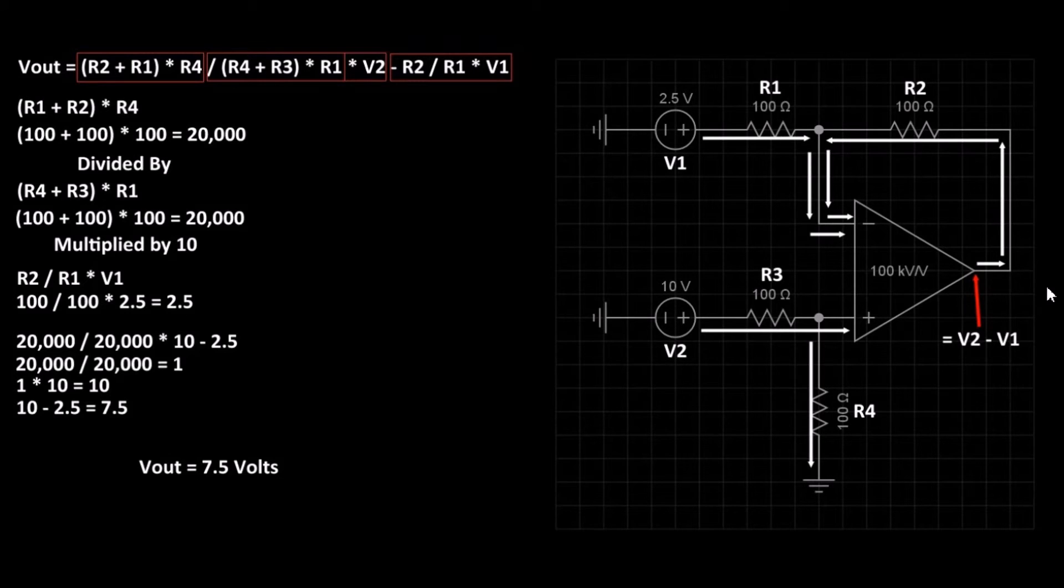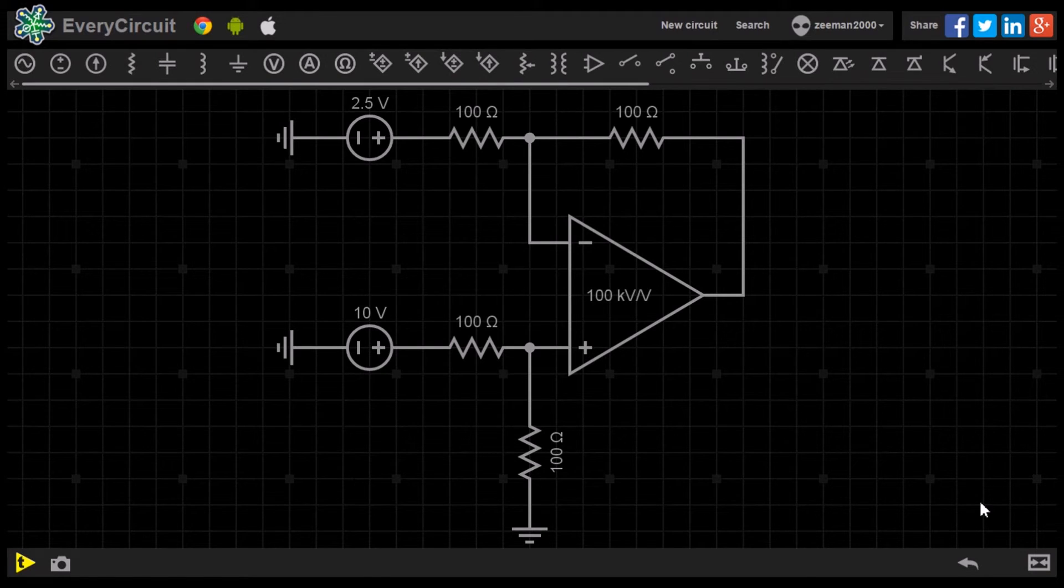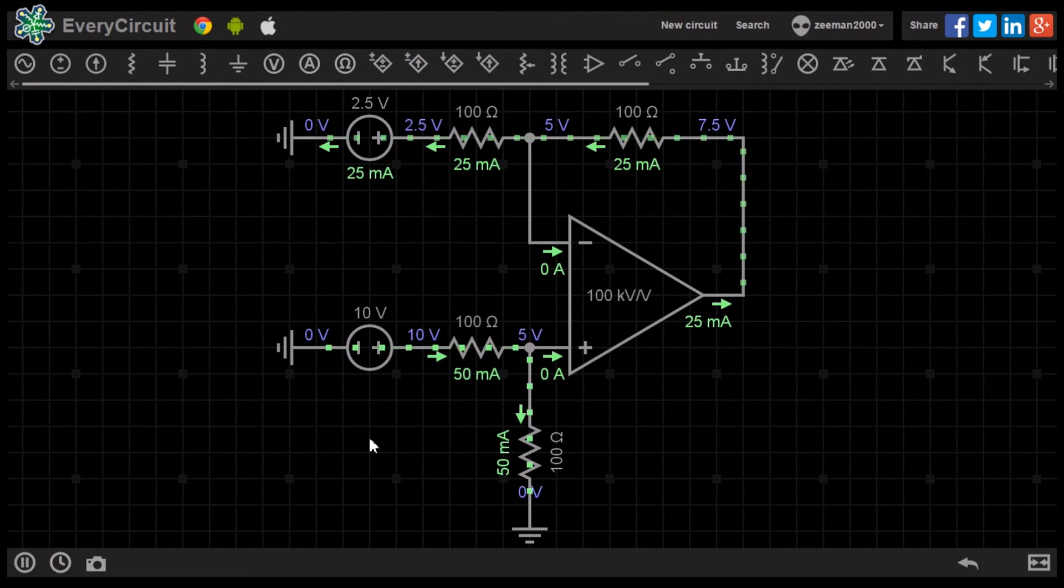So let's now go to the simulator and see the circuit in action. So here we have the circuit in the simulator with the 2.5 volt and the 10 volt DC input. When we play the simulation, we can see the output voltage has been calculated by the circuit correctly and measures the expected 7.5 volts.